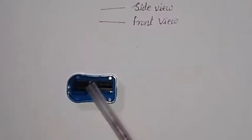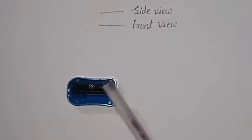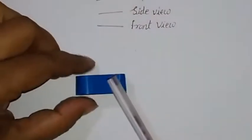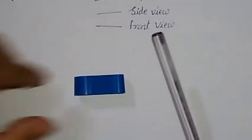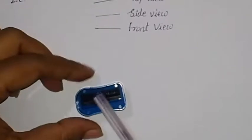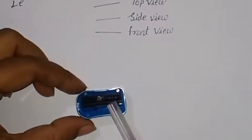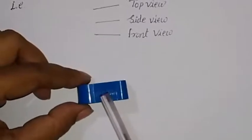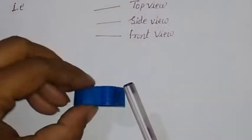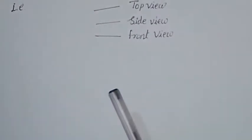For example, what is this? This looks different from this way, it looks different from this way and it looks different from this way. So, this is the front view of the sharpener, this is the side view of sharpener and this is the top view of sharpener.